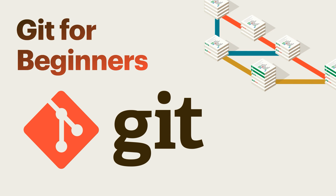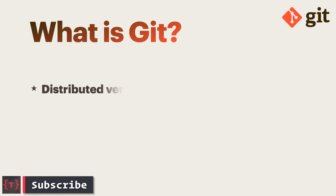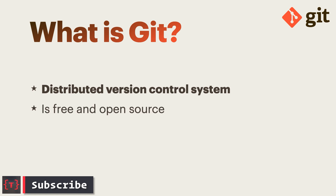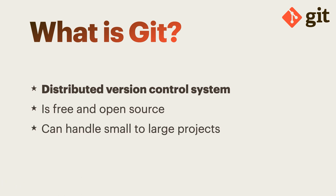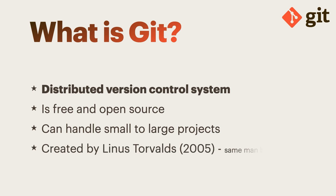Hey guys, welcome back again. My name is Trulli and from this video onwards we'll be doing a mini series on Git. Basically, what is Git? It is a distributed version control system, it is free and open source, and it can handle small to large projects very easily. All these three statements don't make any sense until you know what Git is, and that's what we are going to talk about.